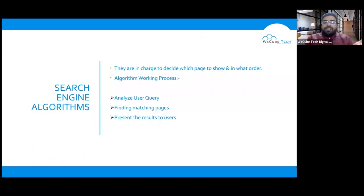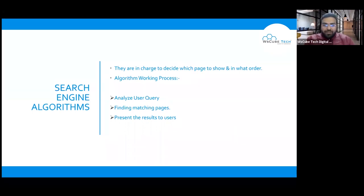Now, the main part is ranking. You see the first result, second result, third result — the first position, second position, third position on the first page. Basically, it comes down to the search engine's algorithm. An algorithm is a complex set of rules that decides, from all the data indexed, which website appears on the first page and which on the second. The algorithm decides this.